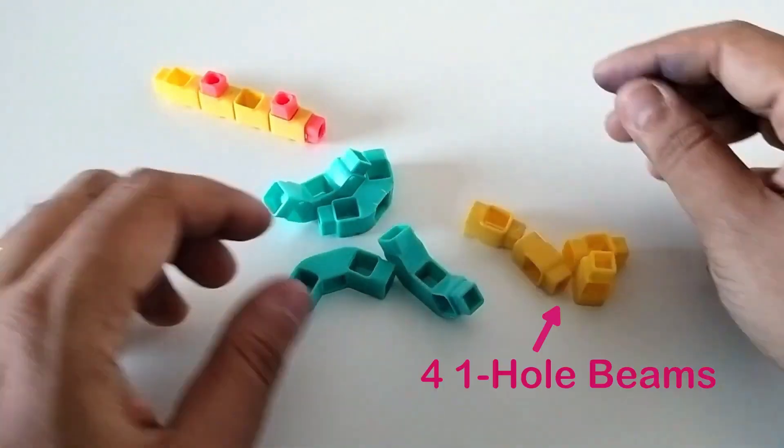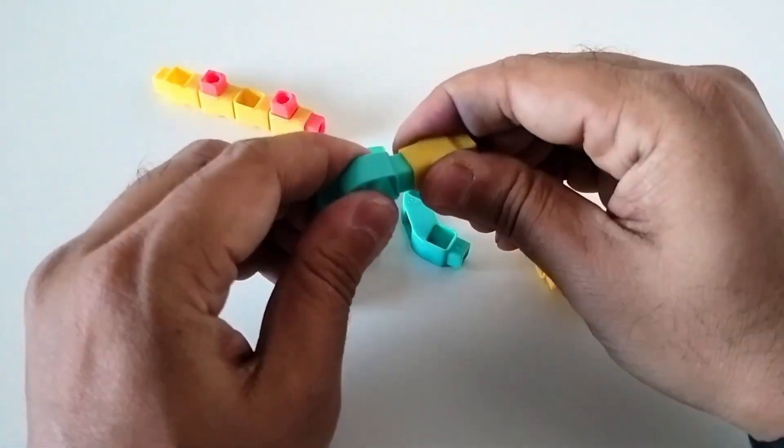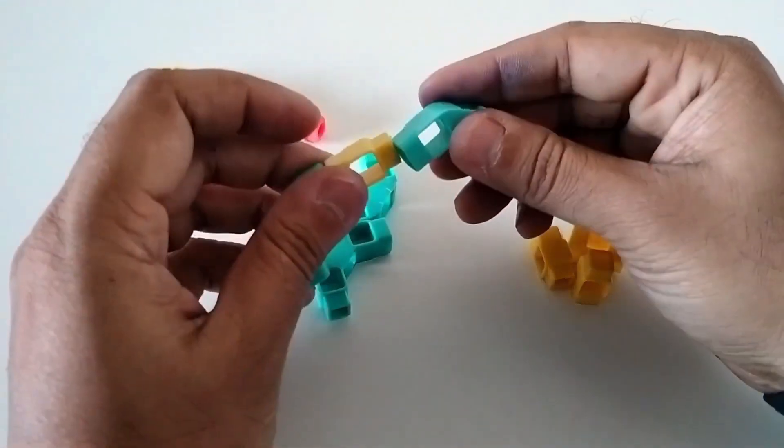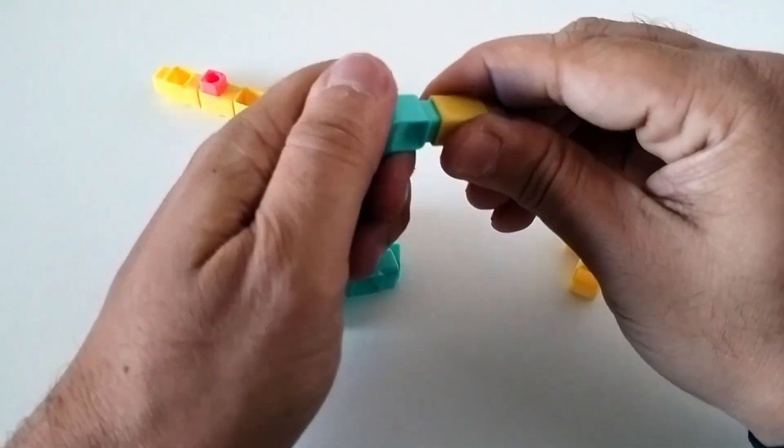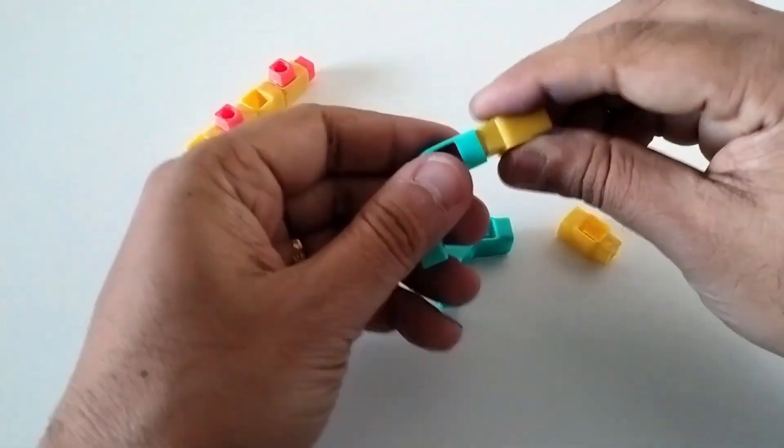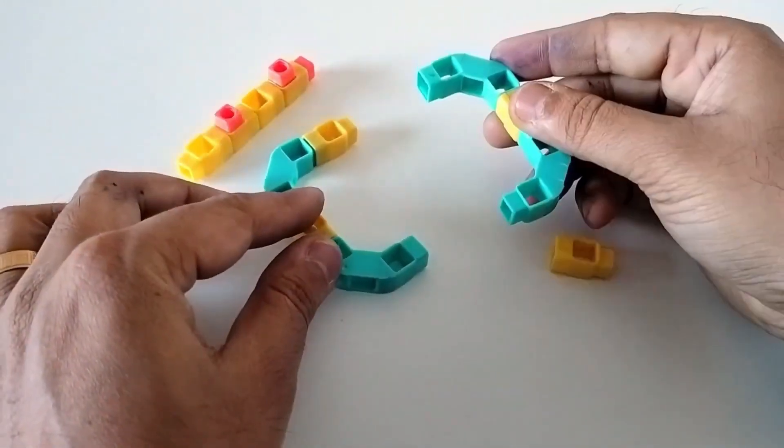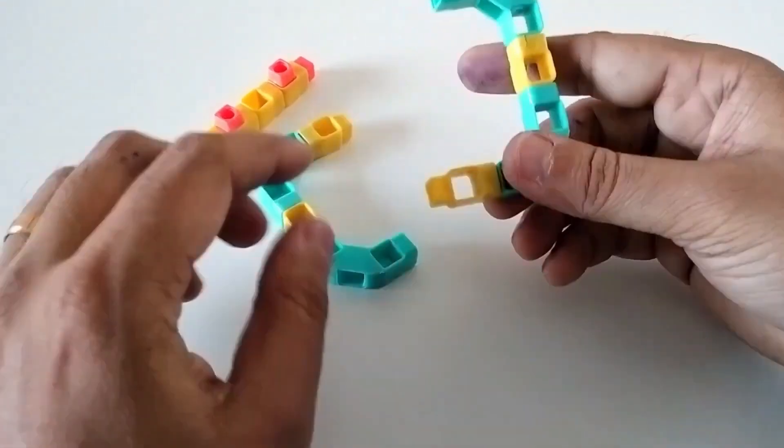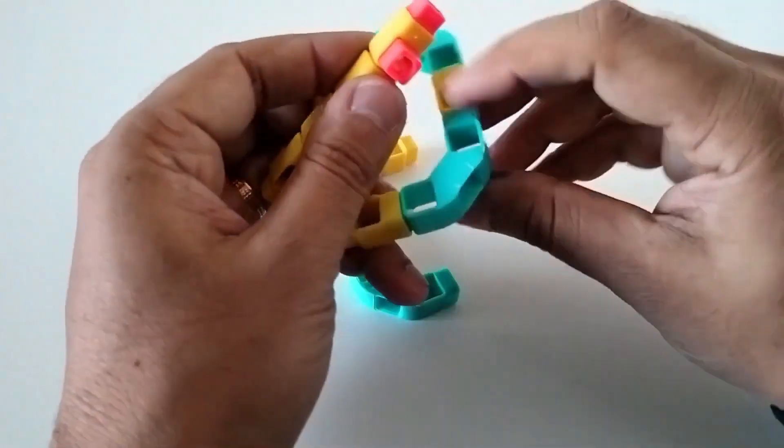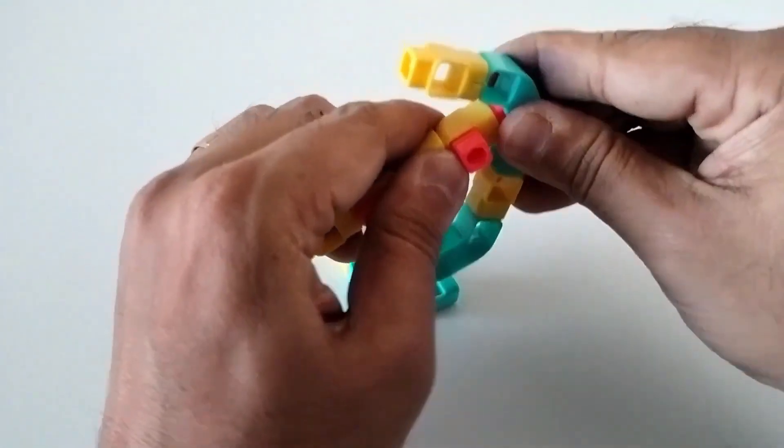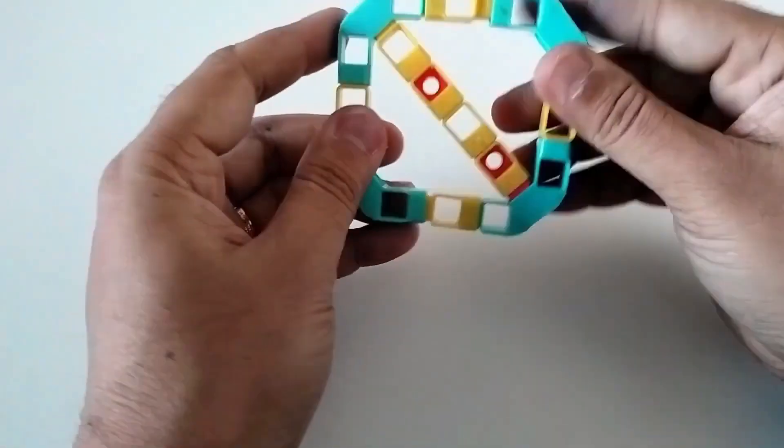Now take four three-hole elbows and four one-hole beams. Join them as shown. Connect the previous structure in the center. Our main frame is ready.